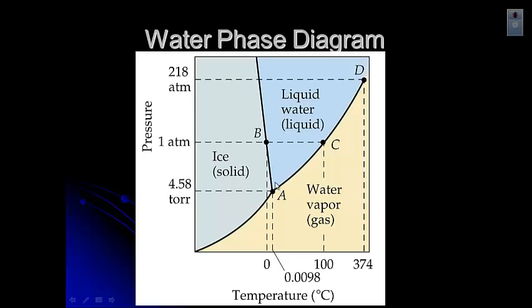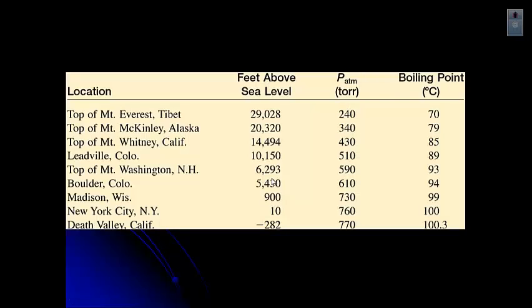So let's look at some boiling water temperatures at different elevations. Because remember, as you go up in elevation, the atmospheric pressure goes down. So if you're somewhere that is fairly close to, like New York City, fairly close to what we consider typical atmospheric pressure, we say the boiling point is 100 degrees Celsius.